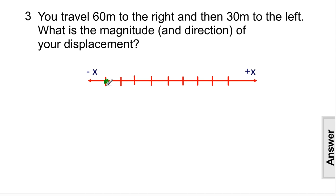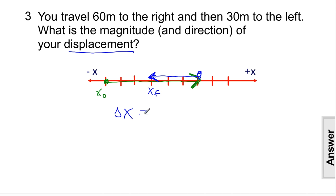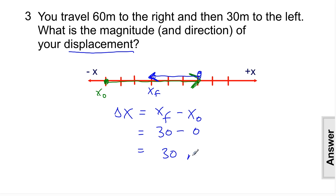Same situation, but now what's the displacement? We start at X0, move right 60 meters, then go back left 30 meters, finishing at 30 meters. For displacement, we only care about where we started and where we finished. The formula gives displacement equals Xf minus X0, so 30 minus 0 equals positive 30 meters. We moved 30 meters to the right — positive 30.